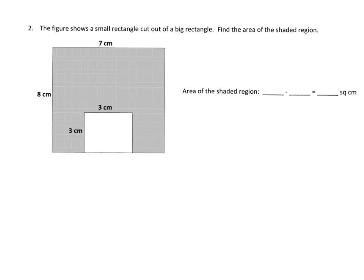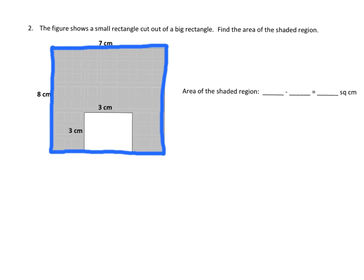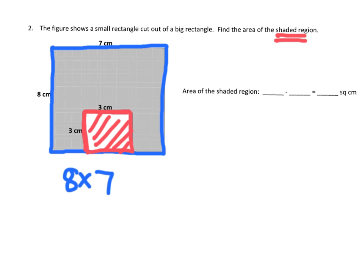Let's practice. This one is specifically telling us to use the subtraction method. So what we're going to do is find the area of the big rectangle. The big rectangle is 8 times 7. But this little rectangle is not shaded in, because we're supposed to find the shaded region. This little piece — it's actually a square — is 3 times 3, so we need to subtract out 3 times 3.